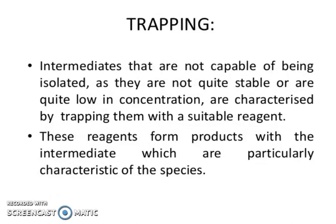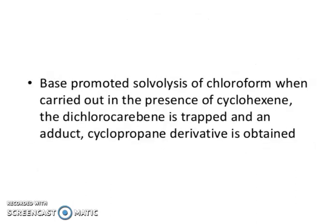Trapping: intermediates that are not capable of being isolated — because they are not quite stable or are too low in concentration — are characterized by trapping them with a suitable reagent. These reagents form products with the intermediate that are particularly characteristic of that species. For example, base-promoted solvolysis of chloroform, when carried out in the presence of cyclohexene, produces a dichlorocarbene-trapped adduct — a cyclopropane derivative.